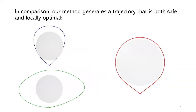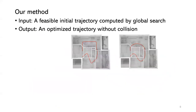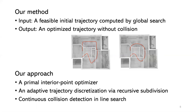In comparison, our method generates a trajectory that is both safe and locally optimal. The left trajectory is their trajectory and the red trajectory is ours — you can see ours is safe, short, and smooth. Our method takes a feasible initial trajectory from global search as input and outputs an optimized collision-free trajectory. Our approach has three components: first, a primal interior point optimizer; second, an adaptive trajectory discretization via recursive subdivision; and third, continuous collision detection in line search.